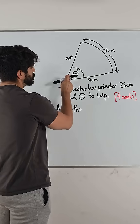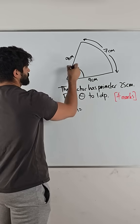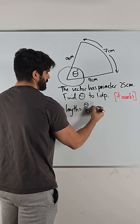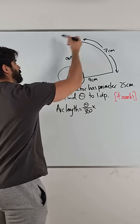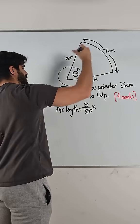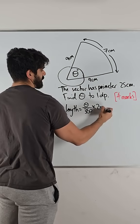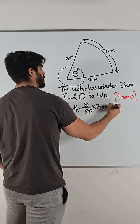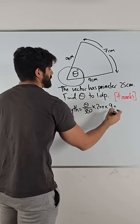So you work out what ratio or what fraction this is relative to a full circle which is theta over 360 times that fraction of the full circumference of the circle which is 2 times pi times the radius. The radius here is 9 and we're saying that equals 7.